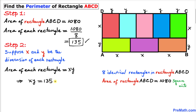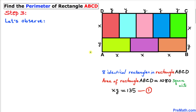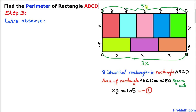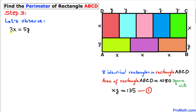Now let's make some observations. The length of this big rectangle on one side is x plus x plus x, which is 3x. On the other side it is 5y. Since these lengths are equivalent, we can equate: 3x equals 5y. Solving for x, we divide both sides by 3, so x equals 5y over 3.